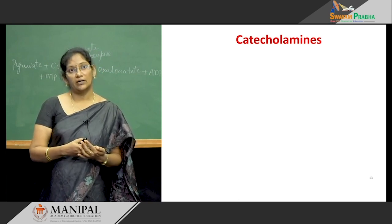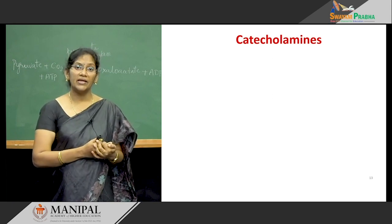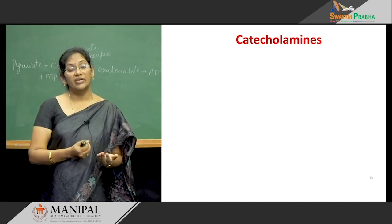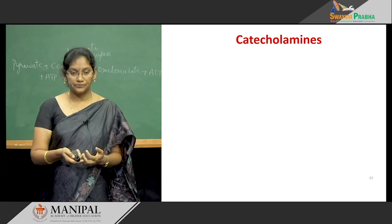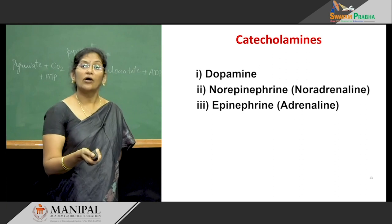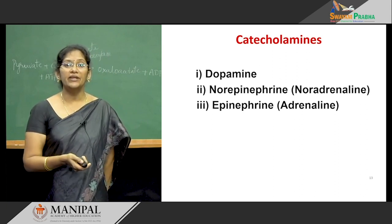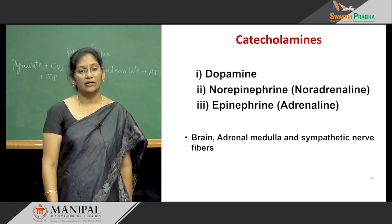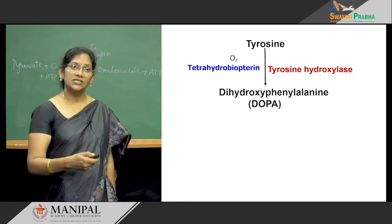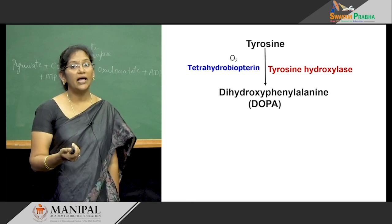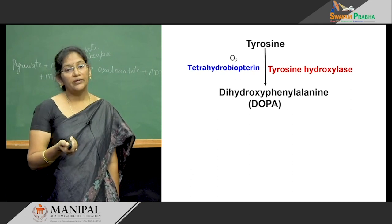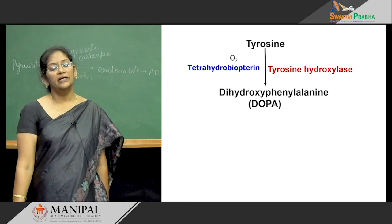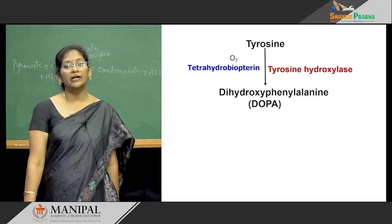Now we are going to see the catecholamines. Dopamine, epinephrine, and norepinephrine are known as the catecholamines. Norepinephrine is also known as noradrenaline and epinephrine is also known as adrenaline. They are mainly synthesized in the brain, adrenal medulla, and sympathetic nerve fibers. Tyrosine is a non-essential amino acid. By hydroxylation using the enzyme tyrosine hydroxylase, tyrosine is converted into dihydroxyphenylalanine (DOPA), requiring tetrahydrobiopterin and one atom of oxygen. In humans, tyrosine is mainly synthesized from phenylalanine by the enzyme phenylalanine hydroxylase, which also requires tetrahydrobiopterin as a coenzyme.